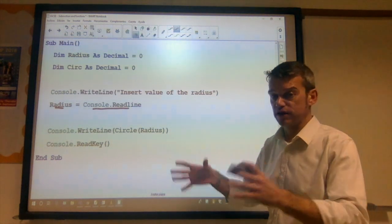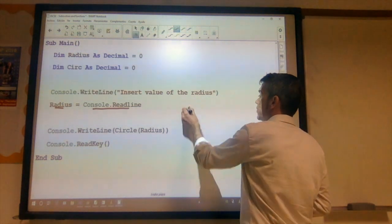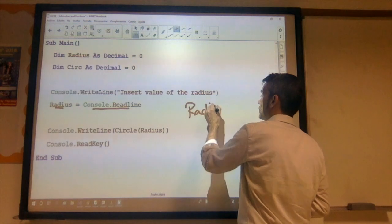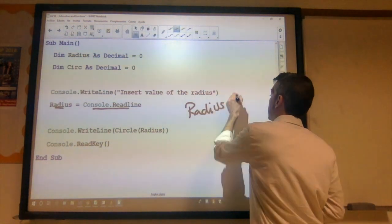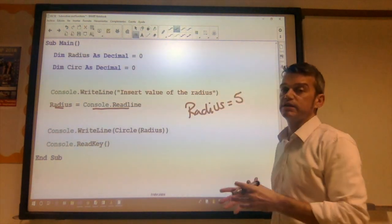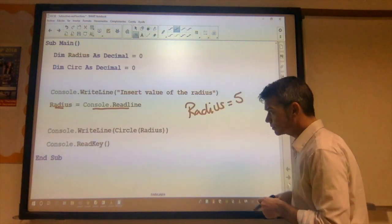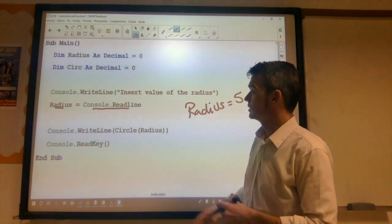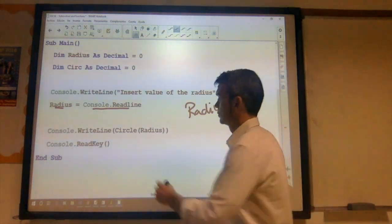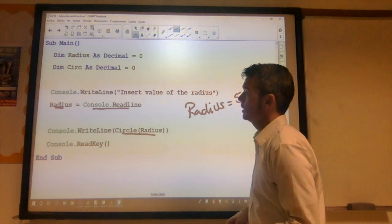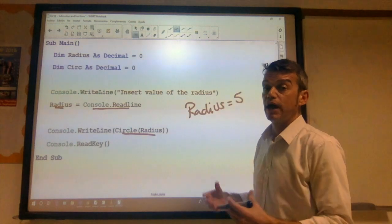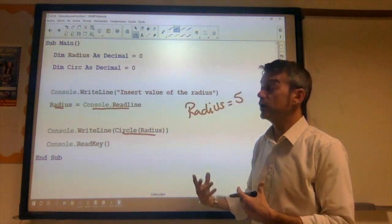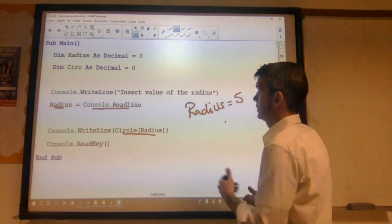Okay, so again, let's say a user enters the number five, presses enter. So now radius, the variable radius contains the value five. And then we get to our next line. Console writeline, so we're outputting something, and here we've got the function call. Okay, we're saying call the function, and pass to it the parameter, the parameter radius.